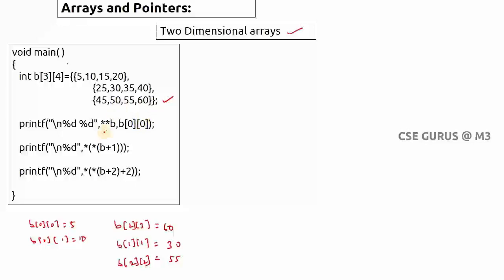Now, without taking an extra pointer variable, `**b` — what will it print? We know b[0][0] is 5. `**b` is indirectly equal to `*(*(b + 0) + 0)`, which equals b[0][0]. The first index represents the row and the second index represents the column.